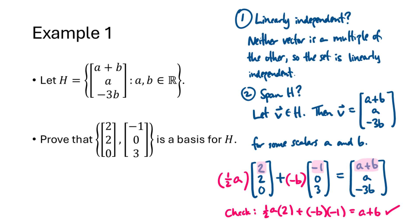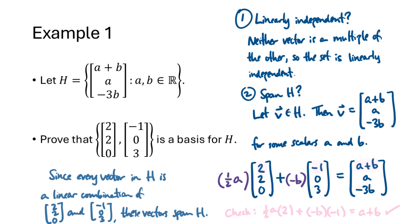So we've shown that every vector in H can be written as a linear combination of (2, 2, 0) and (-1, 0, 3). Since we've already shown that those two vectors form a linearly independent set, that proves that this set is a basis.